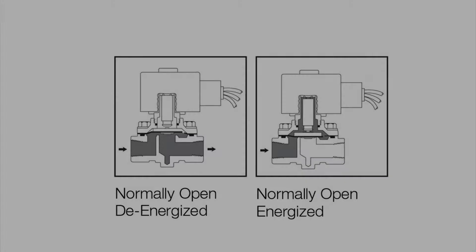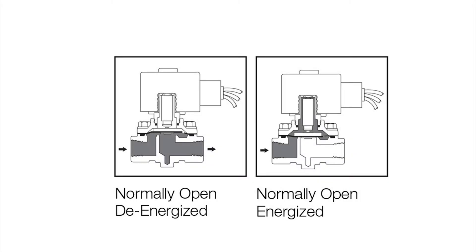A valve that is normally open will pass pressure unless it's energized. When energized, it will hold the pressure. This type of valve works best as an unloader valve as the pump needs to be completely depressurized when it starts. After several seconds of the pump starting, the unloader valve will close and full compression will begin.